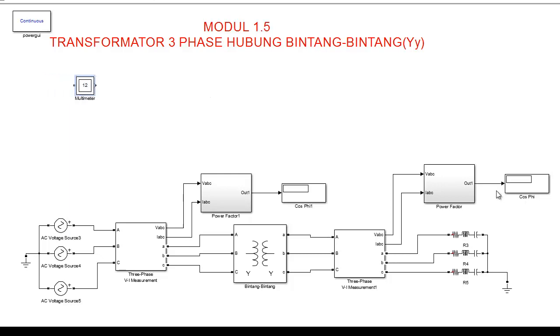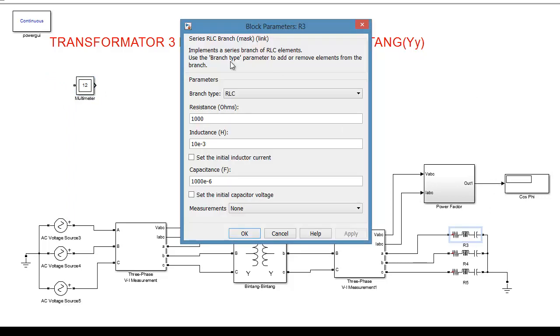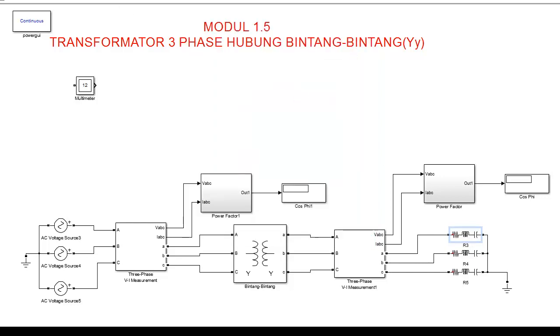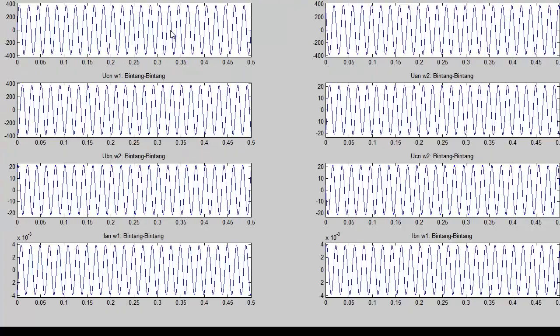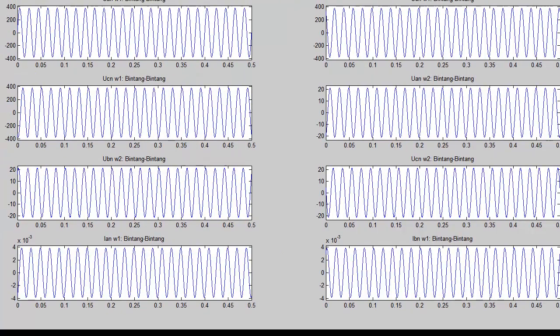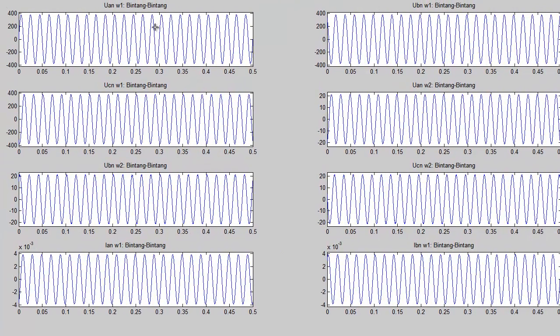Setelah ini kita setting waktunya menjadi 0.5 saja biar nanti tidak terlalu lama, tidak terlalu dapat juga. Selanjutnya untuk beban nanti pakai saja, sudah setting nilai nominal beban RLC disetting disini tinggal langsung dipakai. Selanjutnya adalah saya running.